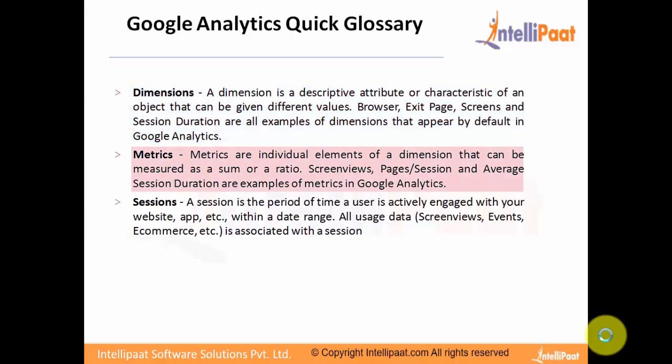Metrics. Metrics are individual elements of a dimension that can be measured as a sum or a ratio. Sessions, screen views, pages per session, and average session duration are examples of metrics in Google Analytics.